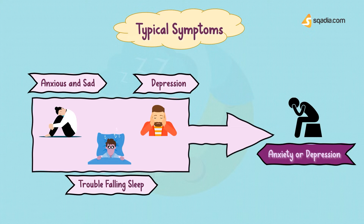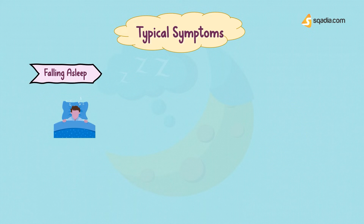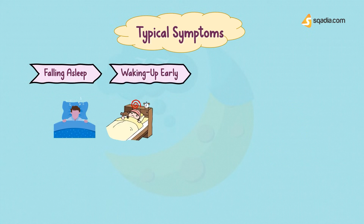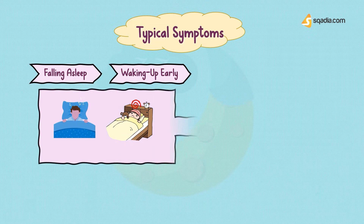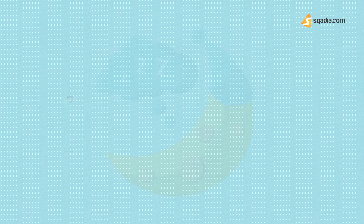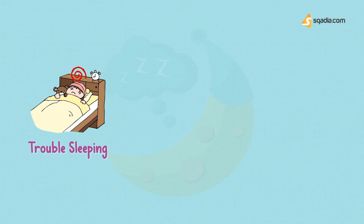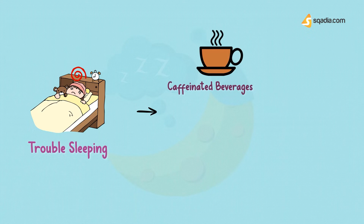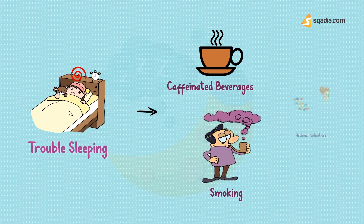If a patient shows typical symptoms like falling asleep with ease or waking up early before getting enough rest, he might be using alcohol or sedatives, which involves drinking alcoholic beverages or taking sedatives. If a patient shows trouble sleeping, he might be using stimulants, which involves drinking caffeinated beverages, smoking cigarettes, or taking asthma medications.